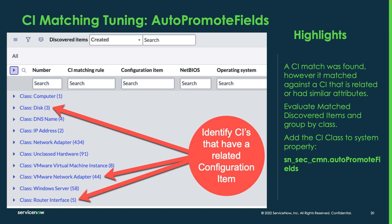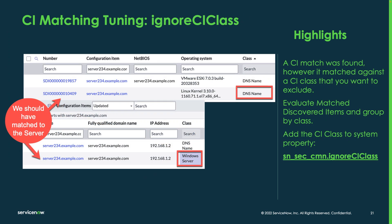How can you tell if you need to adjust the auto-promote system property? Look at the discovered items, group by class, and look for classes you would not expect to be a match — where instead it should have matched to a related CI. For example, if you see network adapters, a router interface, or a disk, that points to why did these match to this and not the associated server? You may need to go to that auto-promote property and add those particular classes. Similarly, for the ignore class, if you see discovered items matched against a DNS name but there's a Windows server out there with the same name, you need to exclude DNS name from being a match by adding that class to the ignore class property.